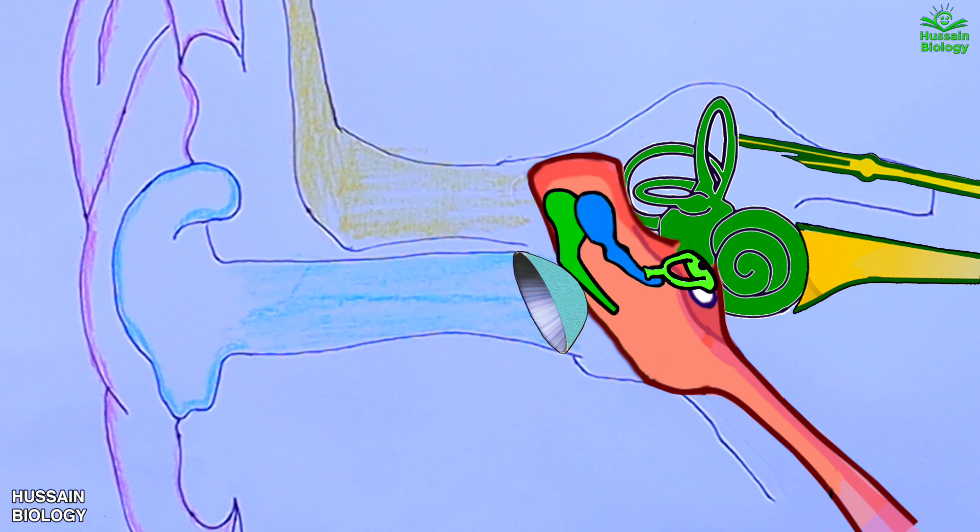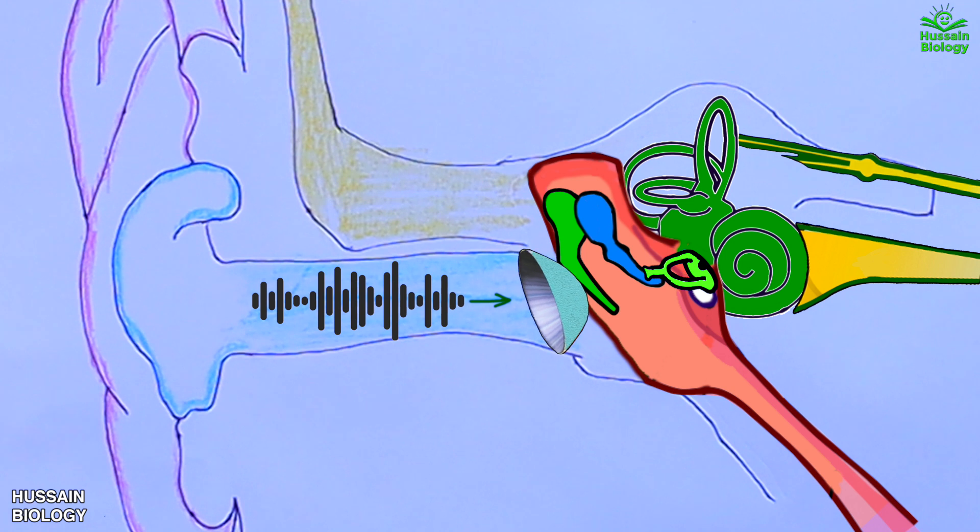Now if we see briefly how sound waves travel and what are these bones and other structures for, we see the sound travels through auditory canal that first of all hits the tympanic membrane which causes it to vibrate. So this way sound waves are transmitted from outer ear to inner ear towards the ossicles.